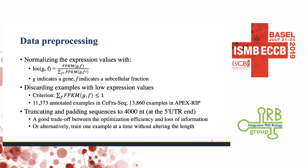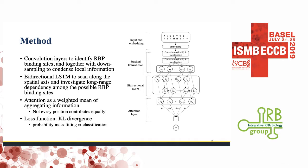Since sequences are of different lengths, we can either cap and pad sequences to a fixed 4,000 nucleotides, trading off training efficiency against loss of information, or train with full-length sequences without losing information but at the cost of training efficiency.